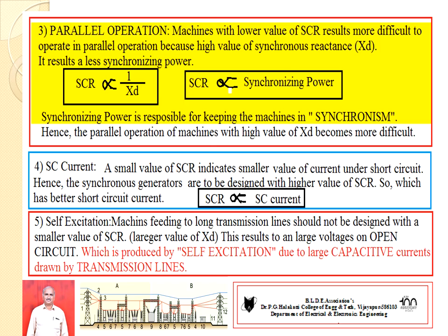Number five: Self-Excitation. Machines feeding long transmission lines should not be designed with a smaller value of SCR. A smaller value of SCR results in a larger value of XD, which results in larger voltages on open circuit produced by self-excitation, due to capacitive currents drawn by the transmission lines. These are all the factors that affect the performance of alternators or synchronous machines.